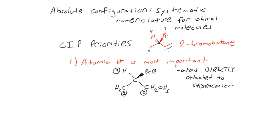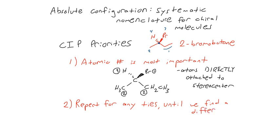How do we differentiate between those two carbon substituents? Well, we repeat. For any ties, if there are atoms with the same atomic number, we keep going along that chain until we find a point of difference. Let's take a look at our stereocenter again: bromine, then our CH2CH3, and then our CH3 substituent.